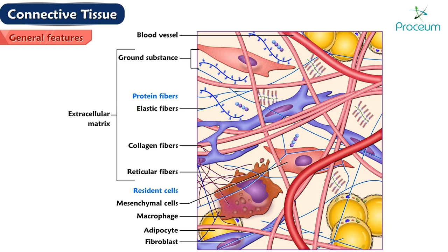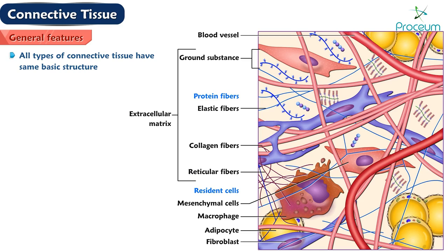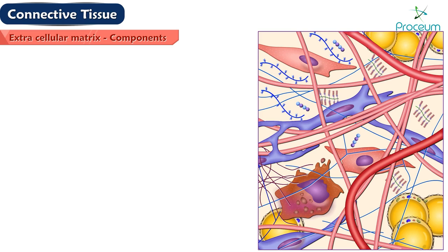Connective tissue is made of cells, fibers, and ground substance. Unlike other tissues, the major constituent of connective tissue is its extracellular matrix. This extracellular matrix gives connective tissue its strength. Although all types of connective tissue have the same basic structure, their physical properties depend on the composition of the extracellular matrix.